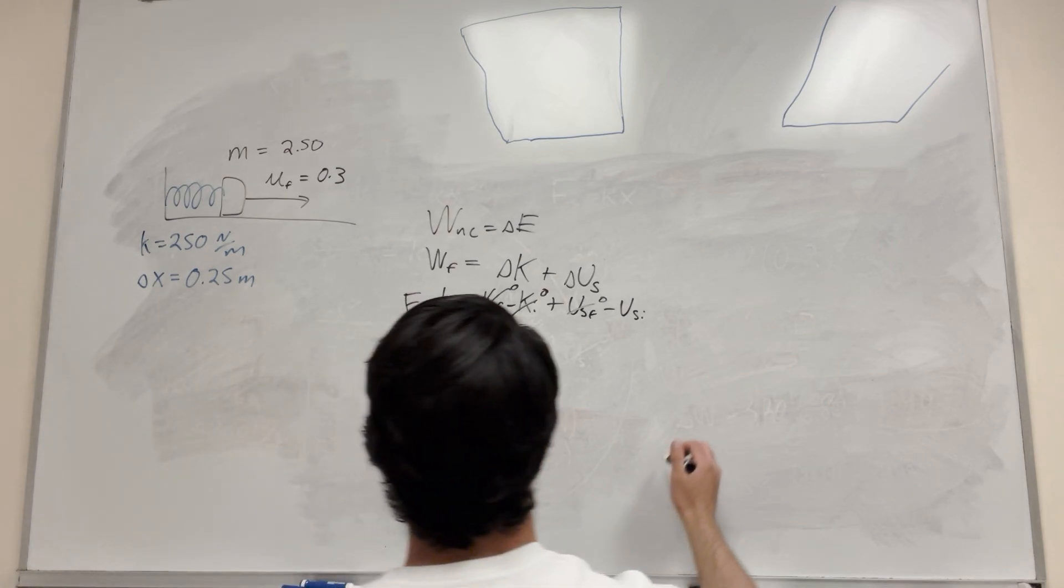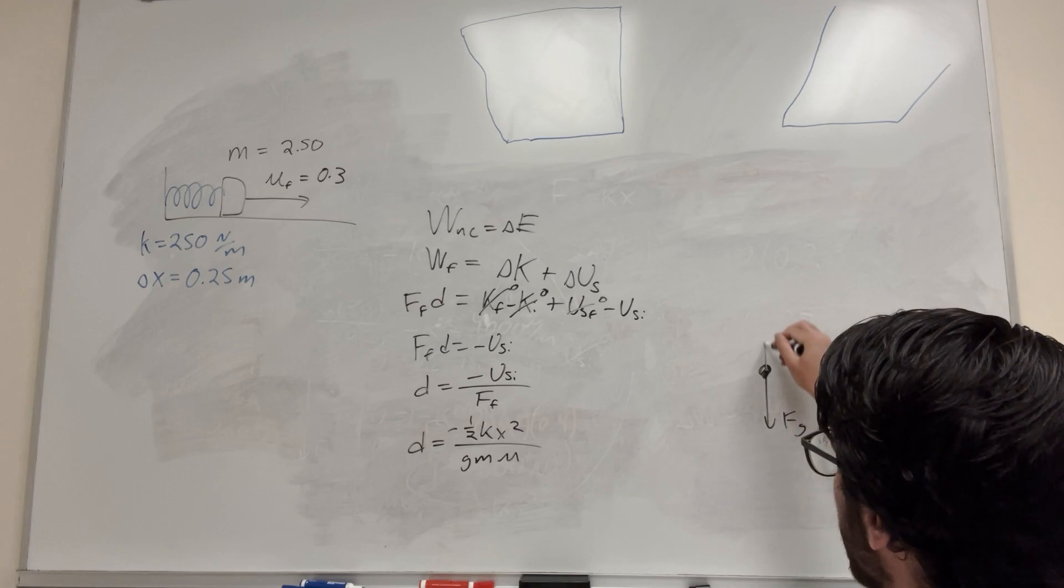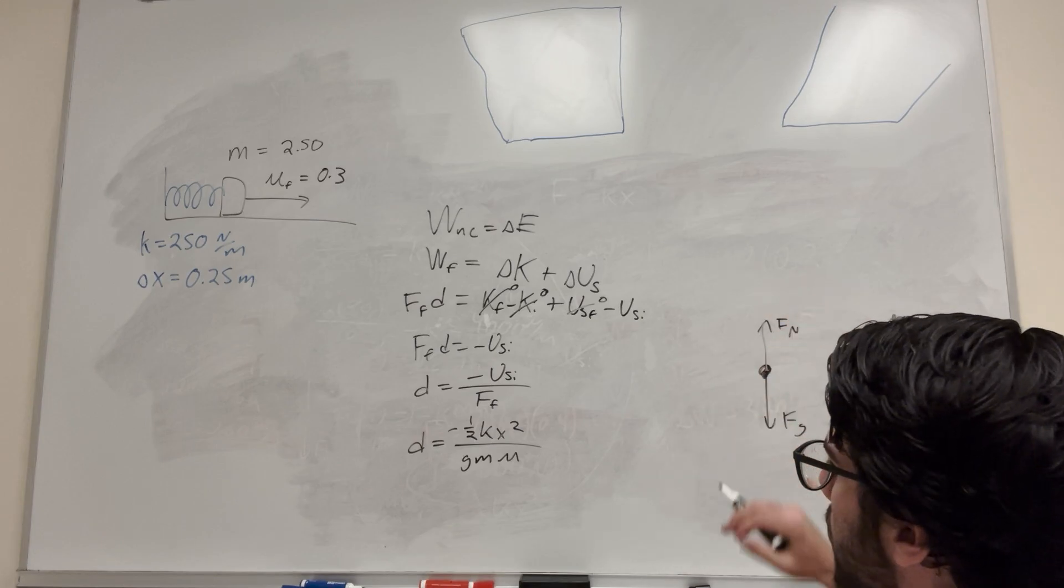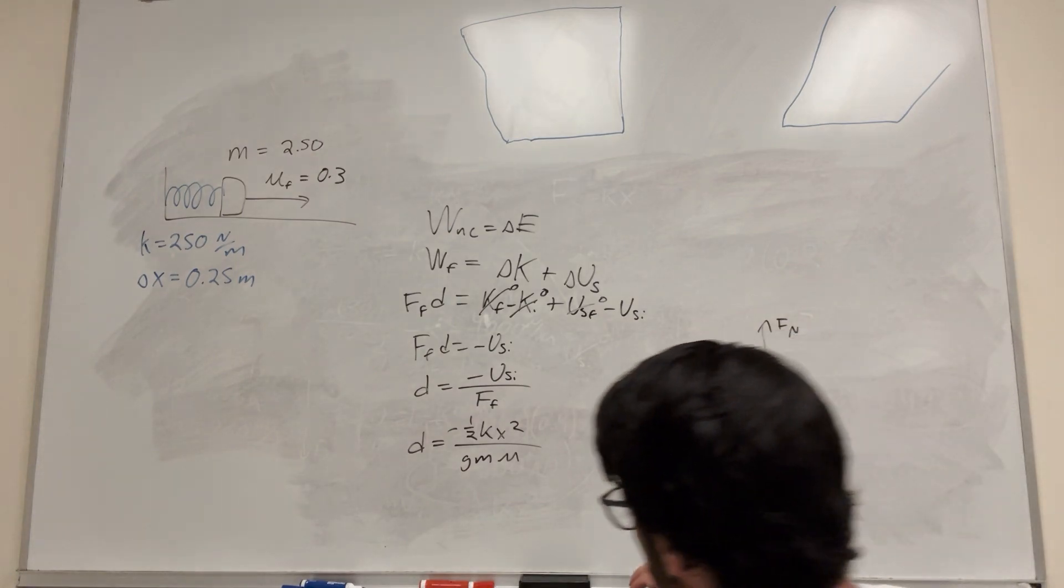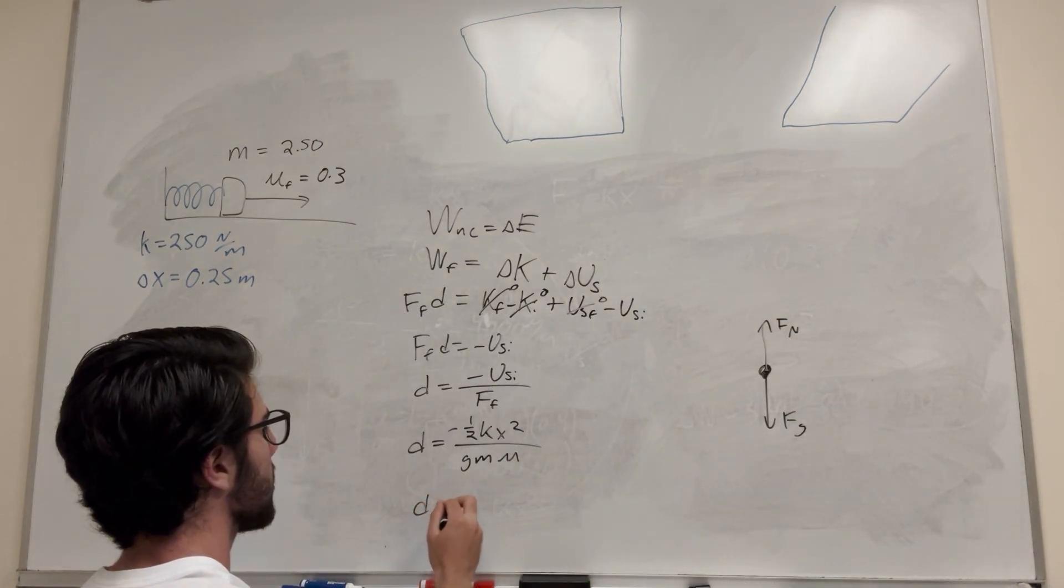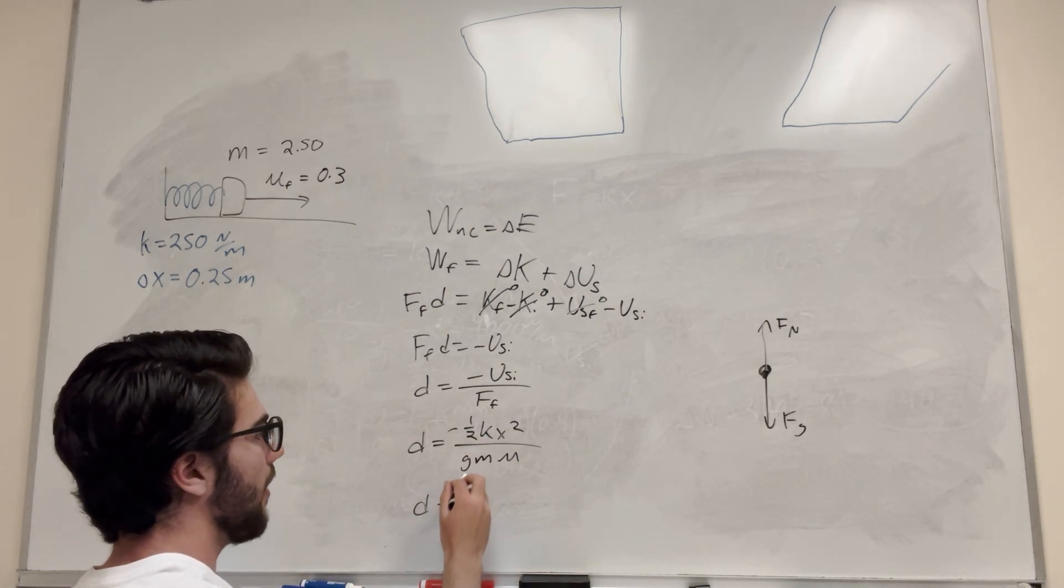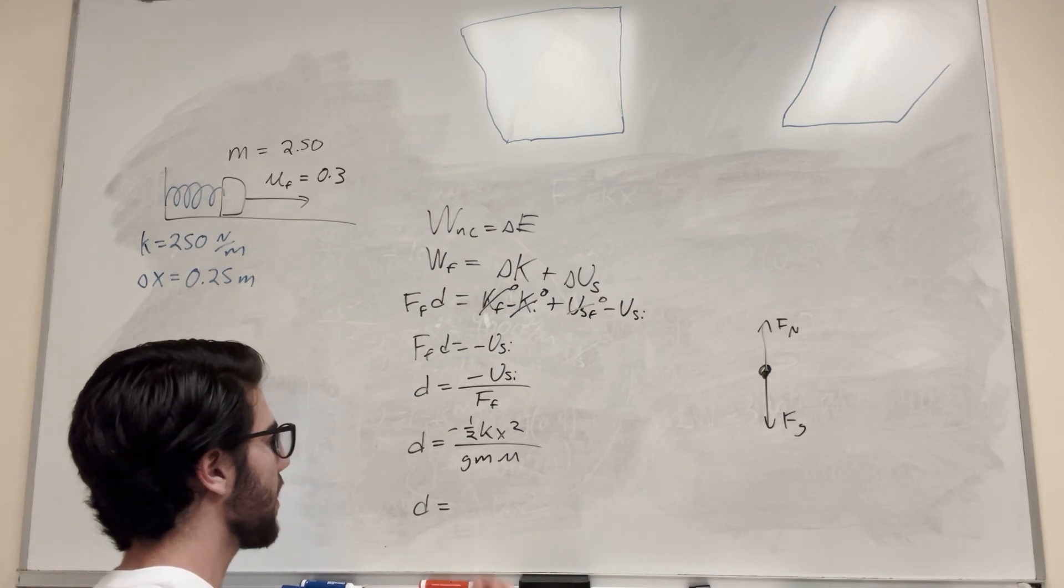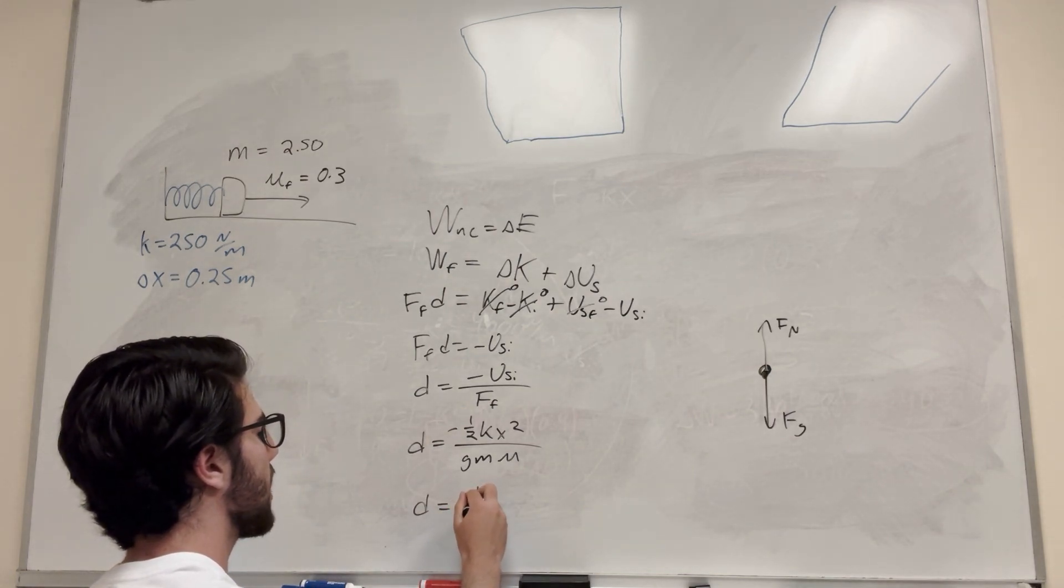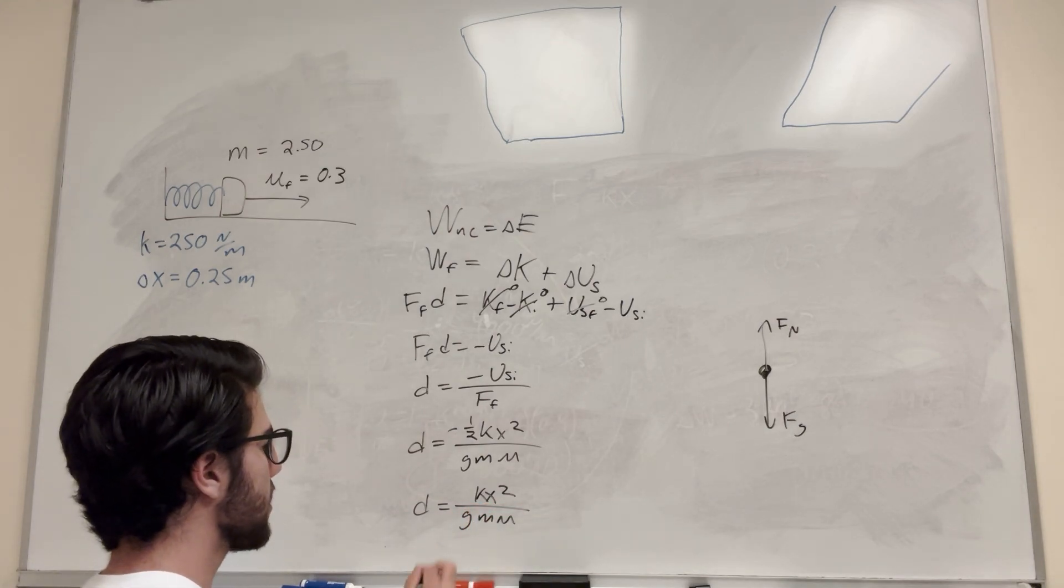Because our force body diagram, if we're just looking in the y direction, all it is is force of gravity and then force of normal. So we know force of normal is gonna be equal to force of gravity, just in the opposite direction. Okay, so then distance. So what do we have here? So let's move that negative 2 to the bottom. So then gravity is also gonna be negative 9.81, so the negatives are gonna drop, and we're gonna end up with K x squared over G mass coefficient of friction times 2 over the bottom.